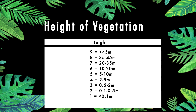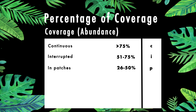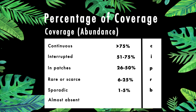To determine the percentage of coverage or abundance, we use lowercase letters. For continuous coverage of more than 75%, we use C. Interrupted from 51 to 75%, the letter I. In patches 26 to 50%, P. Rare or scarce 6 to 25%, R. Sporadic 1 to 5%, B. Almost absent, less than 1%, A.